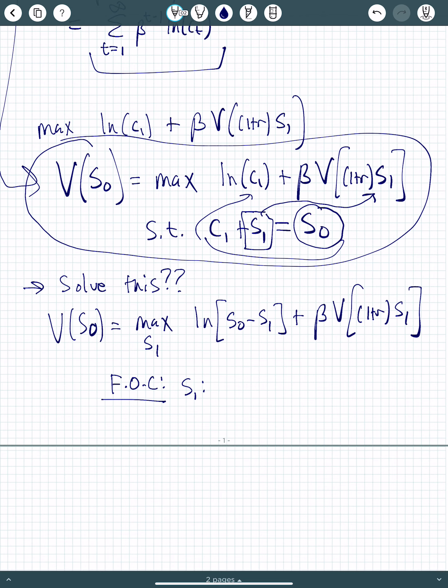With respect to s1, differentiate, I get minus 1 over s0 minus s1, plus beta, and it will be v prime, sorry, it should be times s1, we've got a chain rule, beta times 1 plus r, v prime of 1 plus r times s1, equals 0.